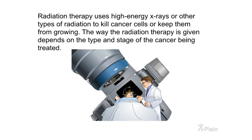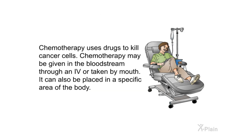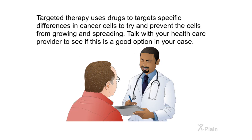Radiation therapy uses high-energy X-rays or other types of radiation to kill cancer cells or keep them from growing; the way it is given depends on the type and stage of cancer being treated. Chemotherapy uses drugs to kill cancer cells and may be given intravenously through an IV, taken by mouth, or placed in a specific area of the body. Targeted therapy uses drugs to target specific differences in cancer cells to try to prevent them from growing and spreading — talk with your health care provider to see if this is a good option in your case.